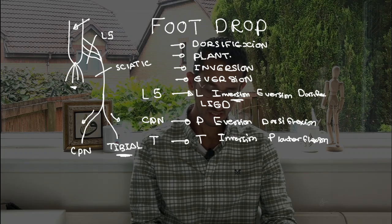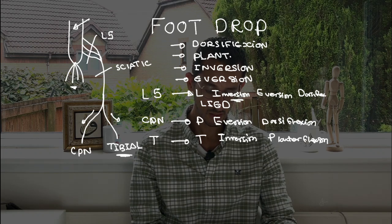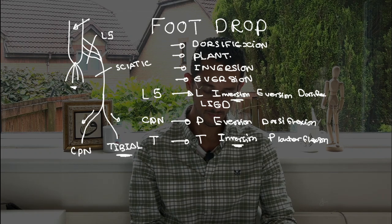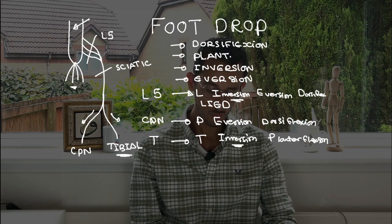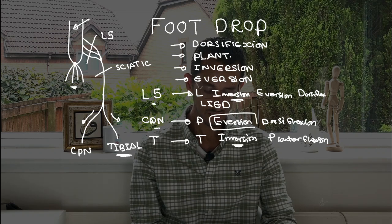So as you can see here, what's common between the tibial nerve and the L5 is the inversion, and what's common between the L5 and the common peroneal nerve is the eversion.